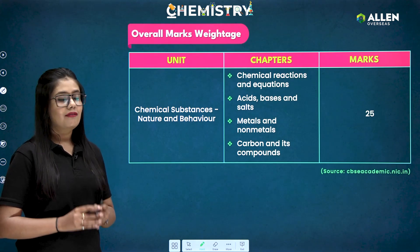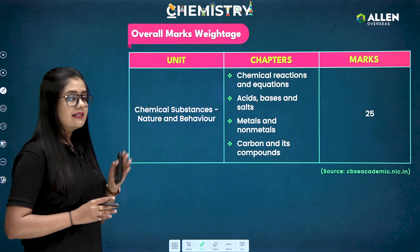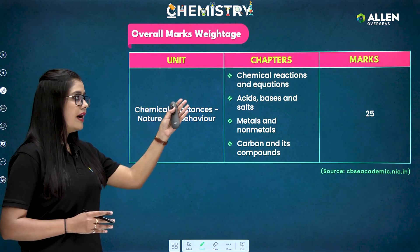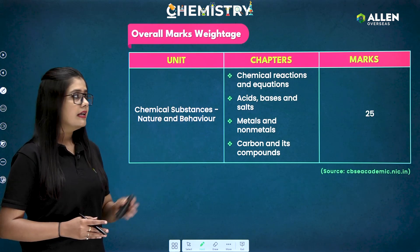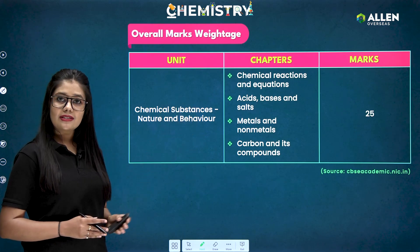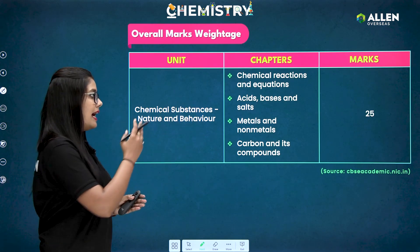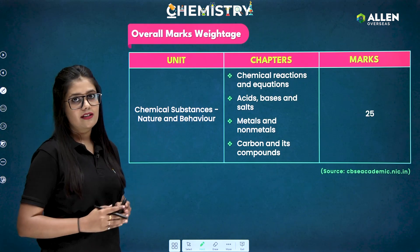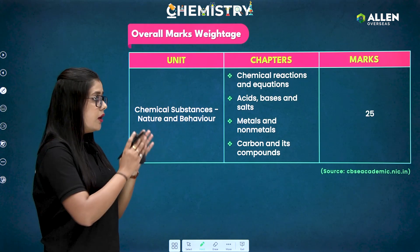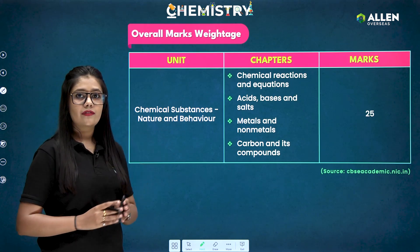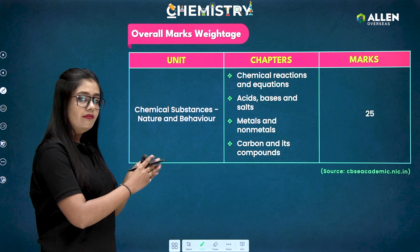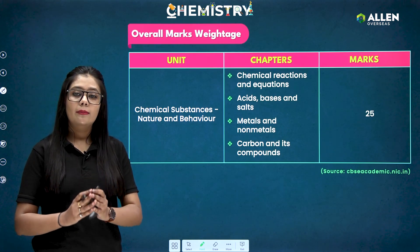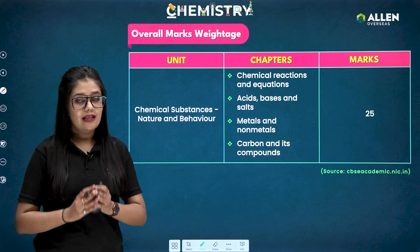In chemistry, you have a single unit — chemical substances, their nature and behavior — which contains four chapters: chemical reactions and equations, acid bases and salt, metals and non-metals, and carbon and its compounds. The overall marks weightage given by CBSE is 25 marks, but this is variable to some extent.